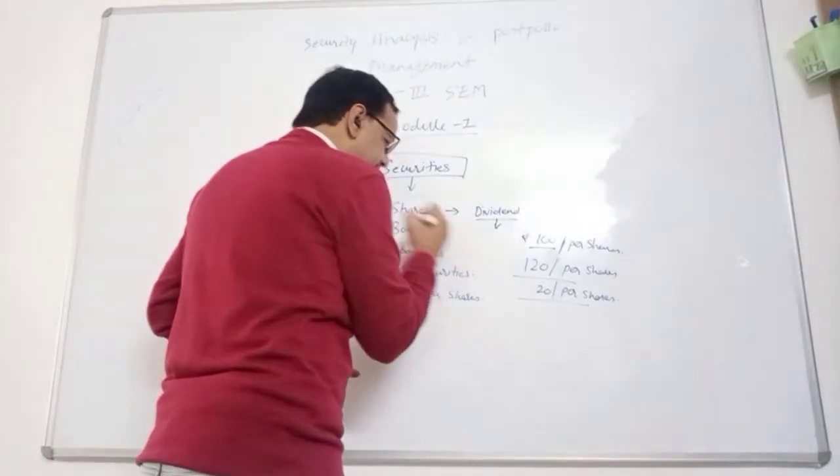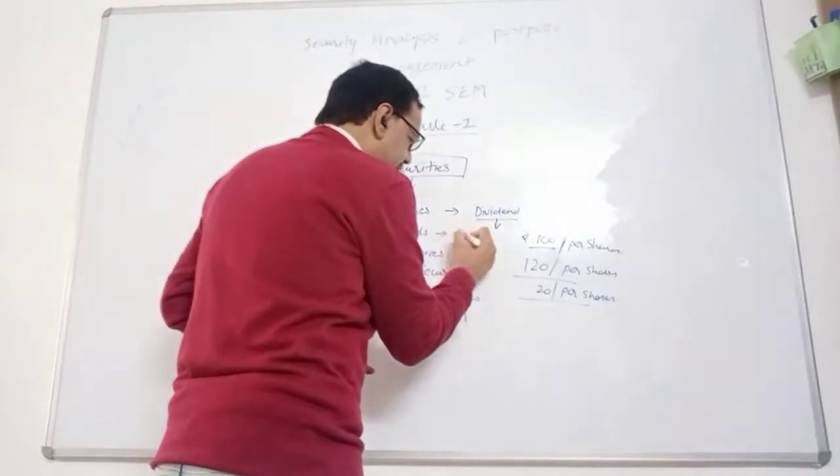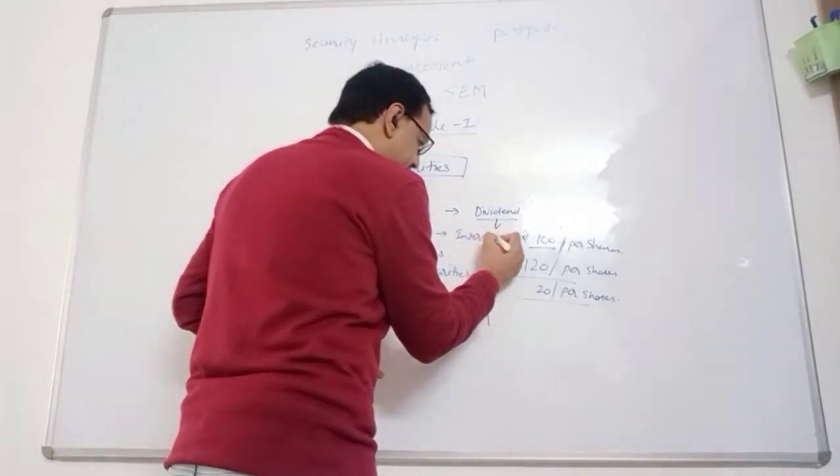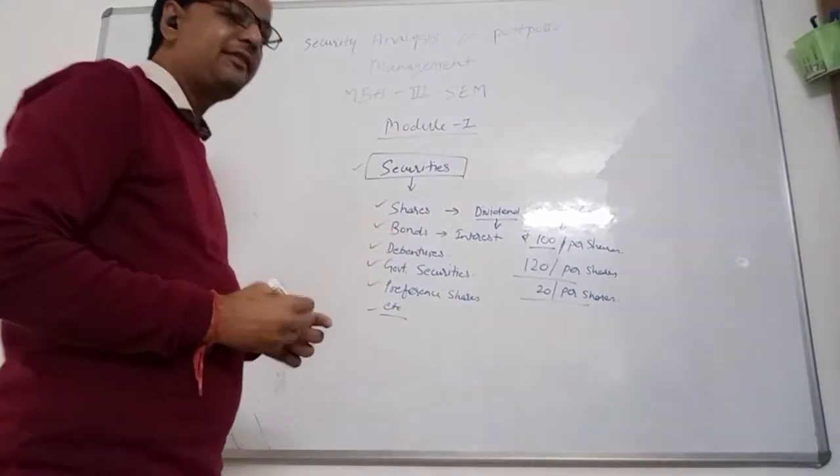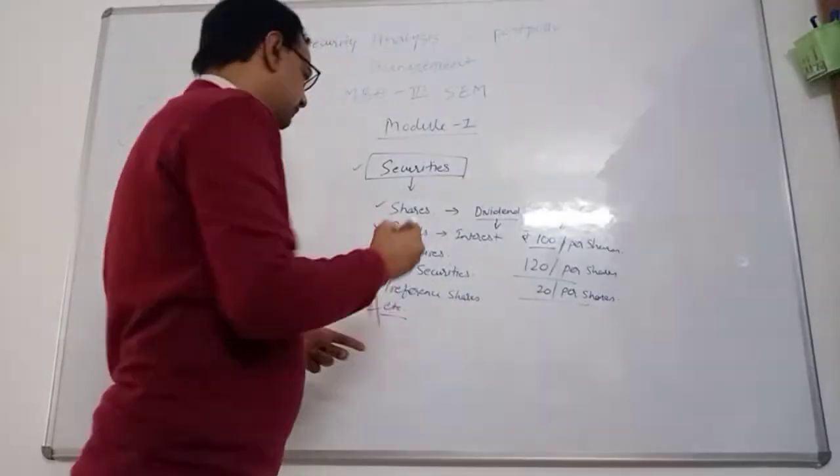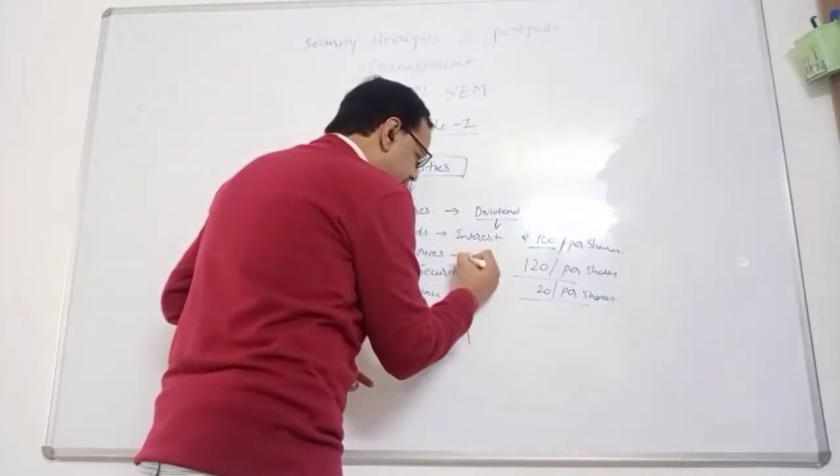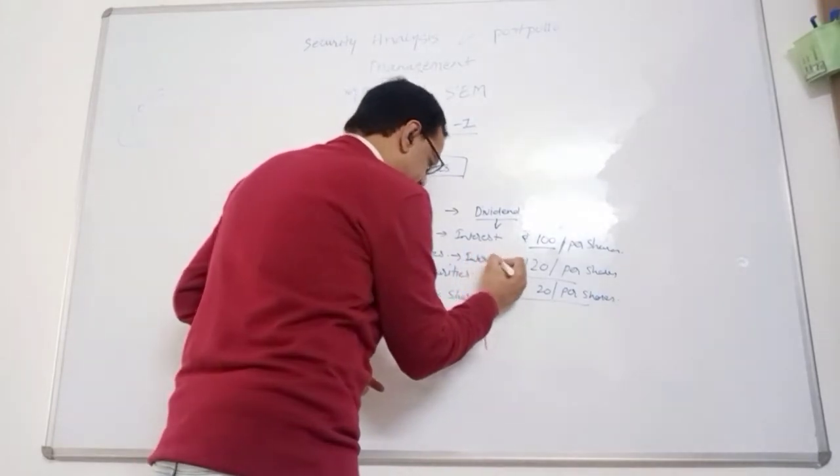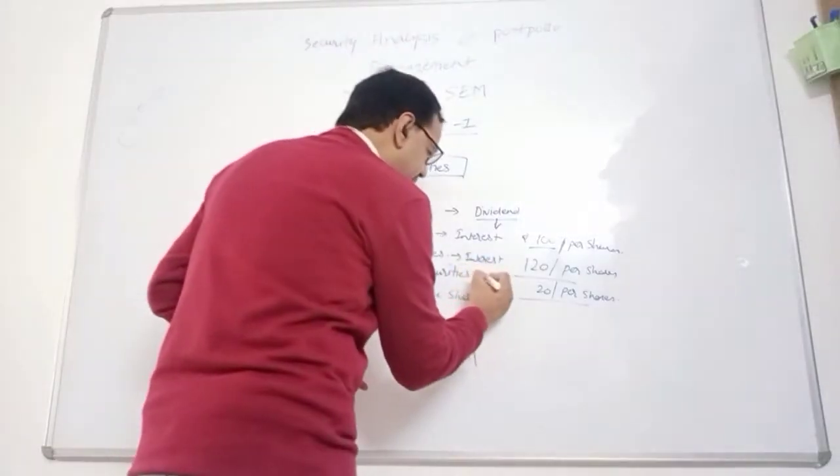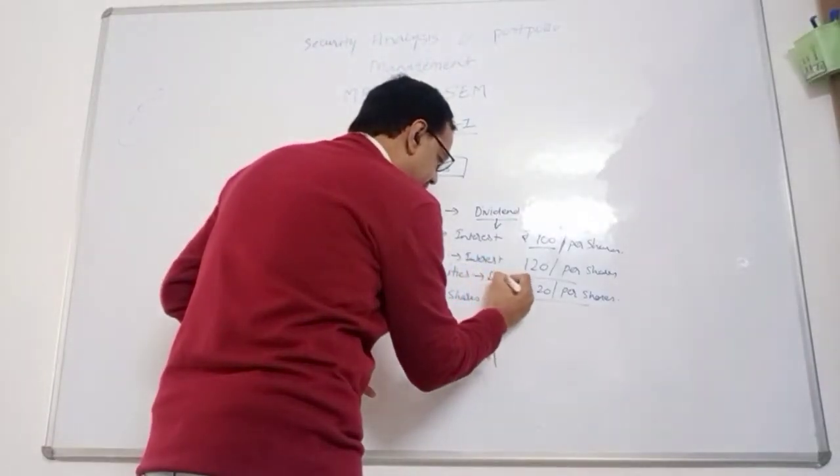In bonds, you have earned interest. Bonds have fixed interest rates. In debentures also you have earned interest. In government securities, you also have earned interest.